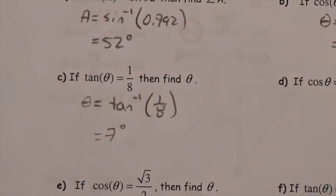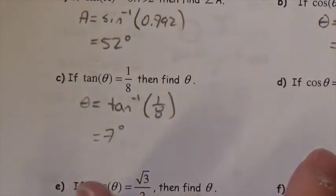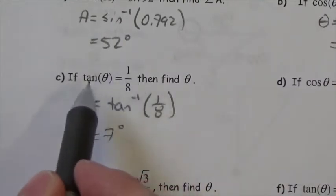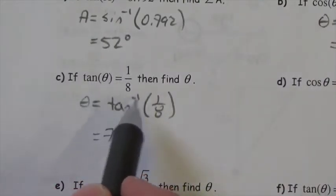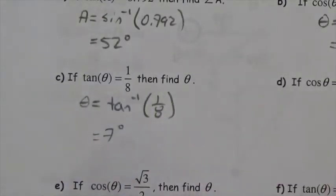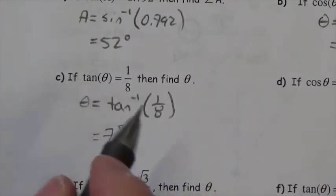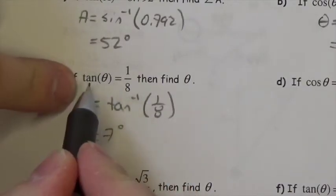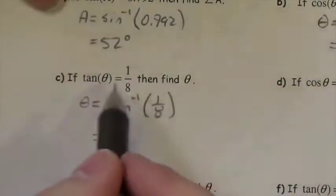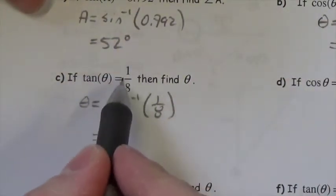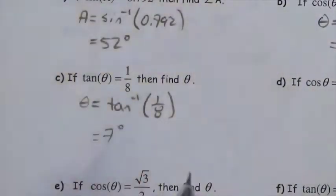Now I want to point out a mistake that often gets made here: people don't use the inverse tangent, inverse sine, or inverse cosine on the ratio — they'll just use sine, cosine, or tan without thinking about it. You really need to understand that when you know the angle, it makes sense to use sine, cosine, or tan — that will produce the ratio. If you don't know the angle and you've got the ratio, then you have to do the opposite, which is the feature just above the sine, cosine, and tan on your calculator.